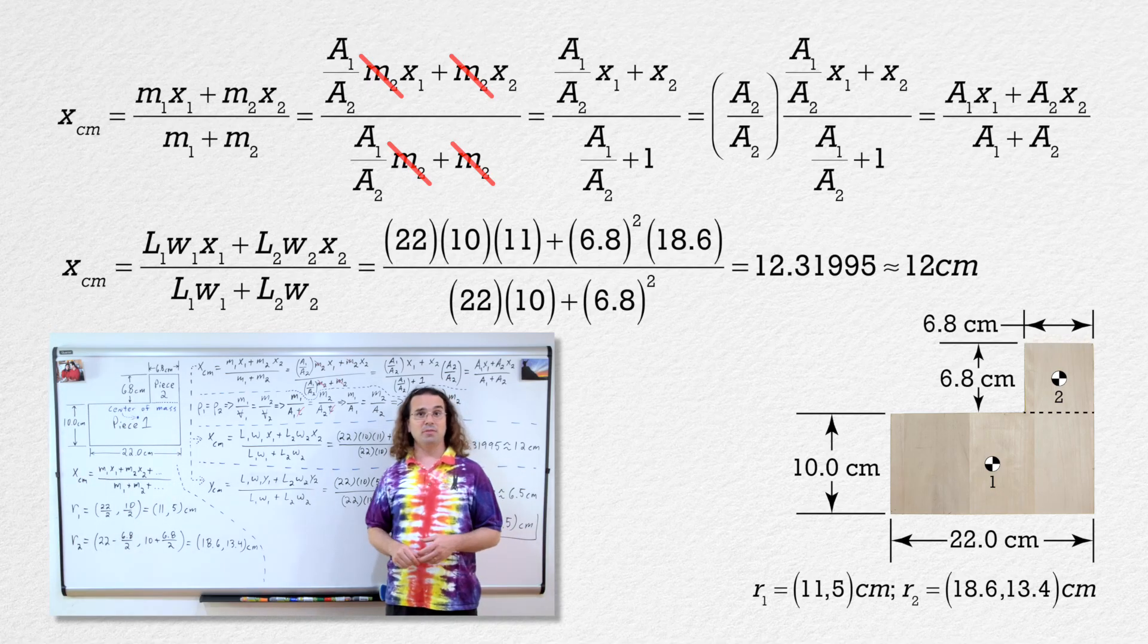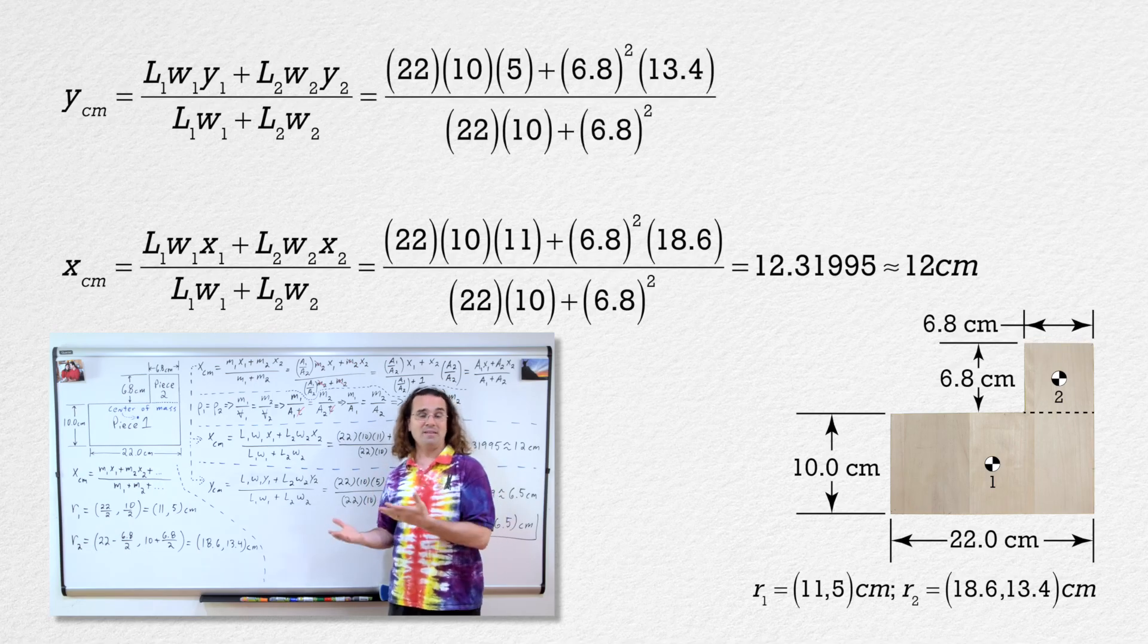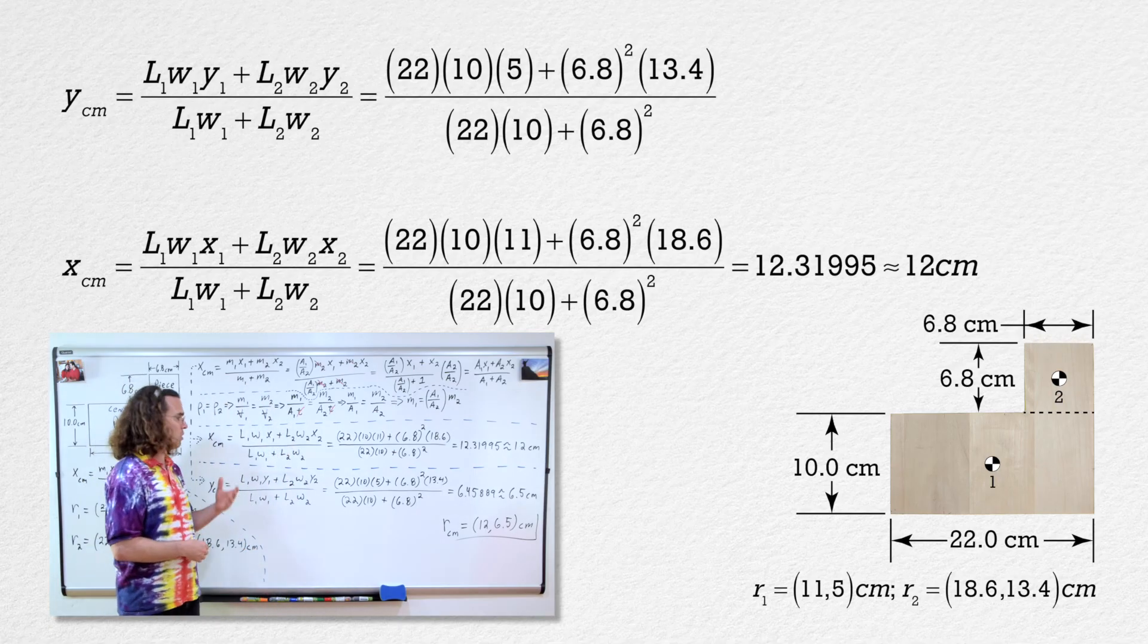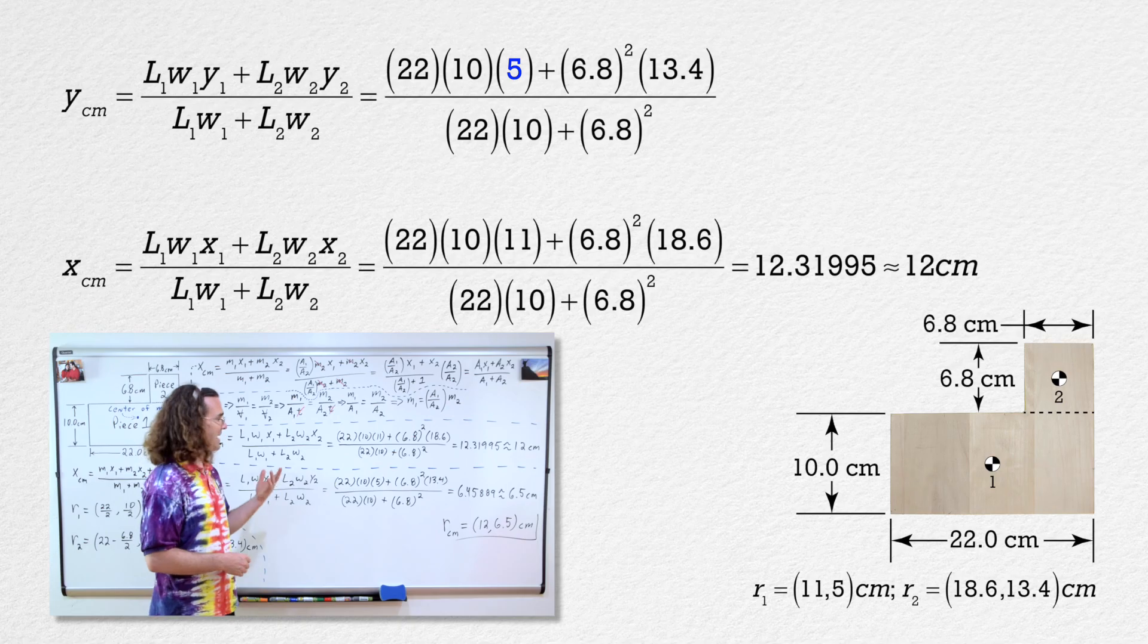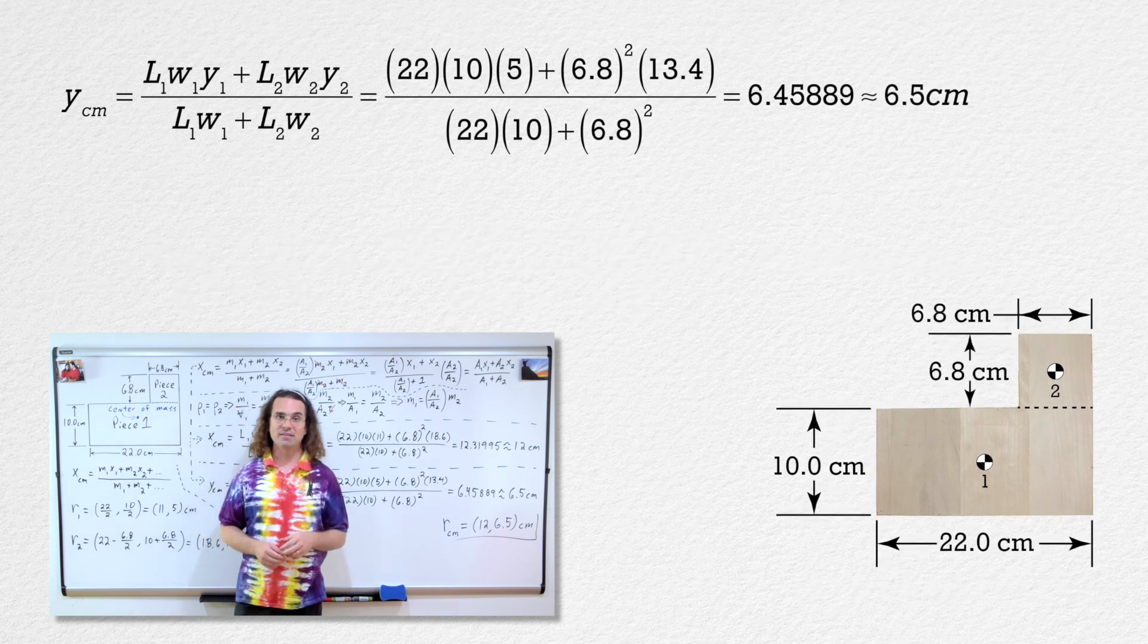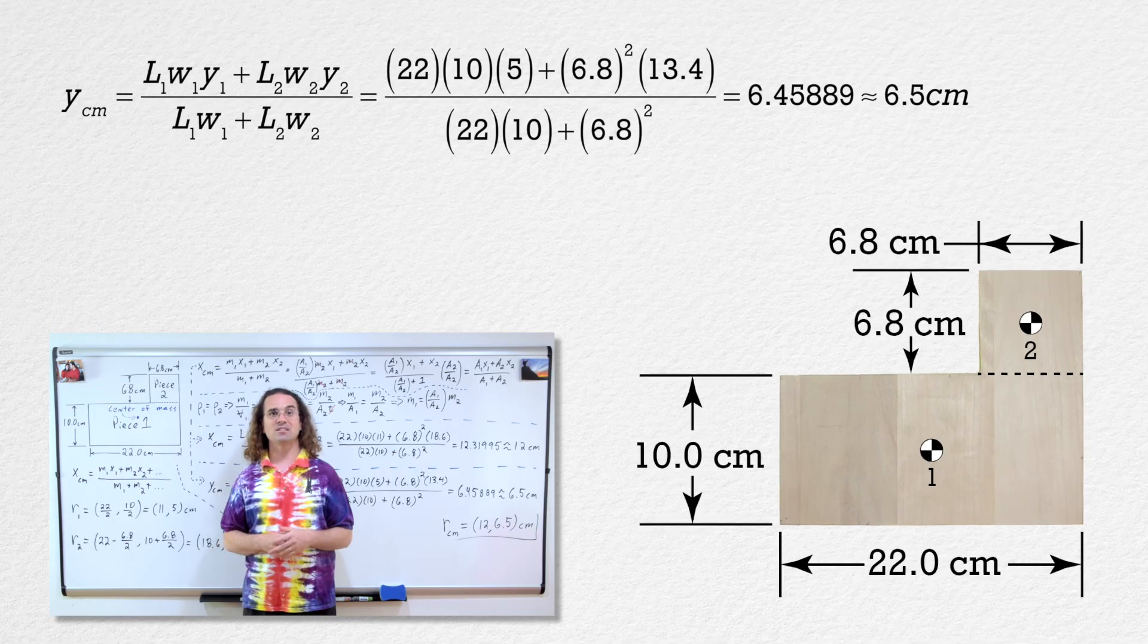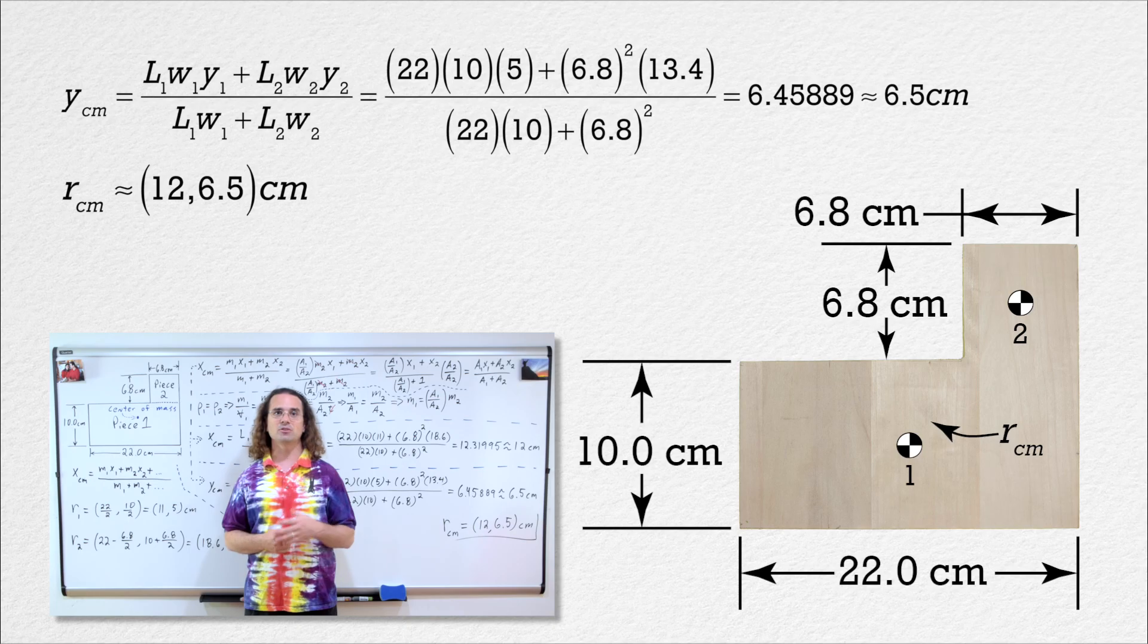Correct, and we can do the same thing for the y-position center of mass, only substituting in y-values for the positions instead of x. So, for the y-position for piece 1 we have 5 centimeters and for the y-position for piece 2 we have 13.4 centimeters. Which gives us 6.45889 or 6.5 centimeters with two significant digits. So, the position of the center of mass of the L-shaped block is 12 centimeters to the right of and 6.5 centimeters above the lower left-hand corner of the block.